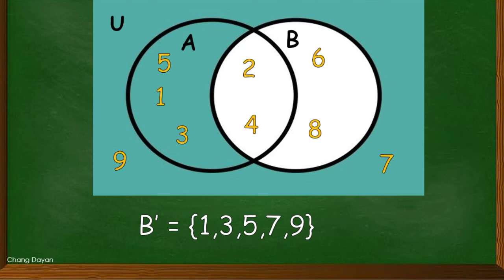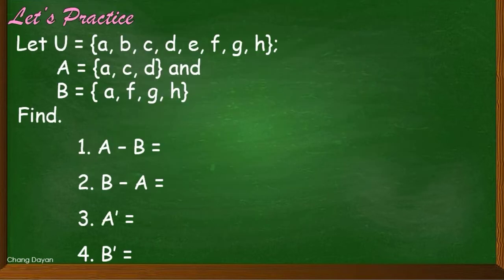Now let us have a practice. Our universal set here consists of elements A, B, C, D, E, F, G, H. The elements in set A are A, C, D. In set B we have A, F, G, H.